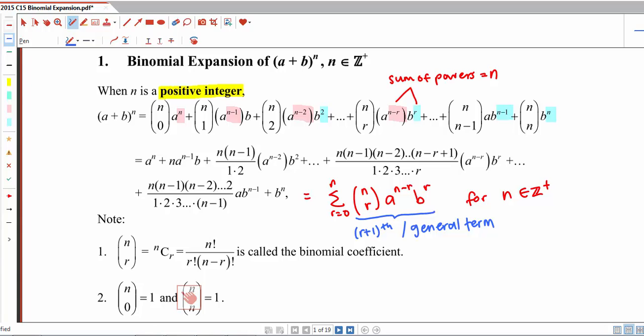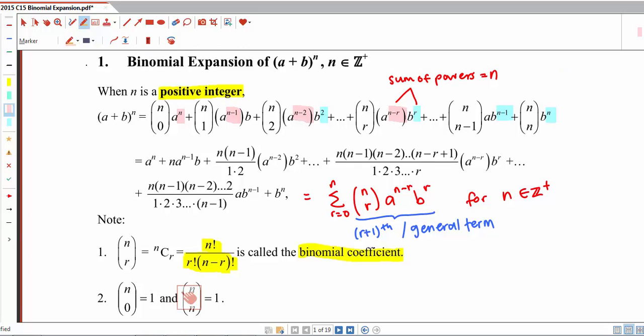So just a point to note, n choose r is actually n factorial divided by r factorial multiplied by n minus r factorial. And this is what we call the binomial coefficient. Now let's look at the next page.